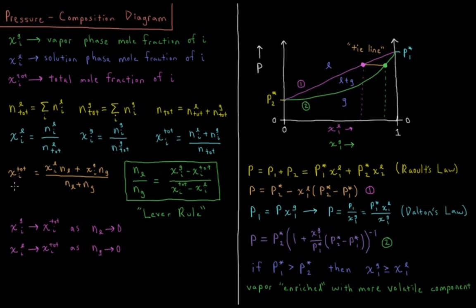Similarly, we can find the total mole fraction of i by doing a weighted average of its mole fraction in the liquid and gas phases, taking into account the total moles in each. So χᵢᵗᵒᵗᵃˡ equals the mole fraction in the liquid times the number of moles of liquid, plus the mole fraction in the gas times the number of moles of gas, divided by the total moles of liquid plus gas. We can now rearrange this equation into the boxed result.